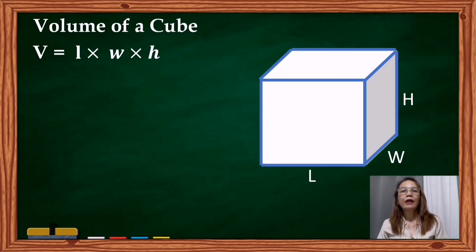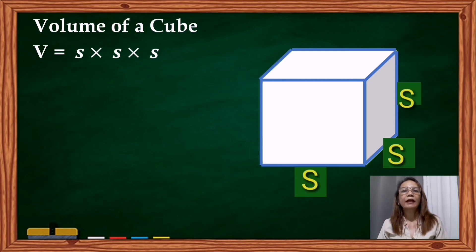Thus, the formula to find the volume of a cube is side times side times side, or volume is equal to side cube, or S cubed, or S raised to 3.